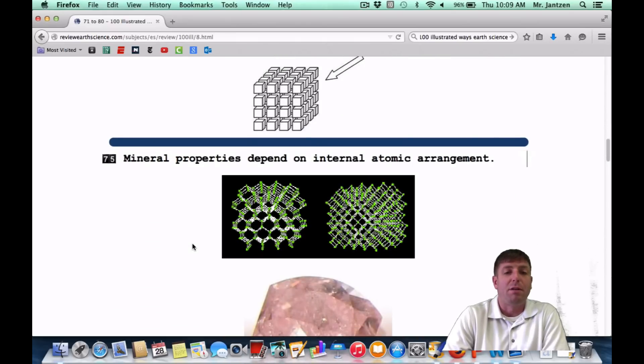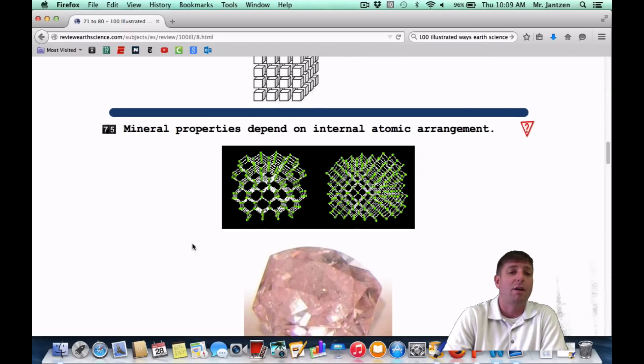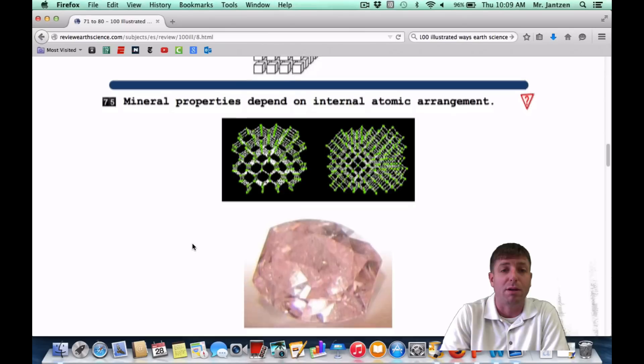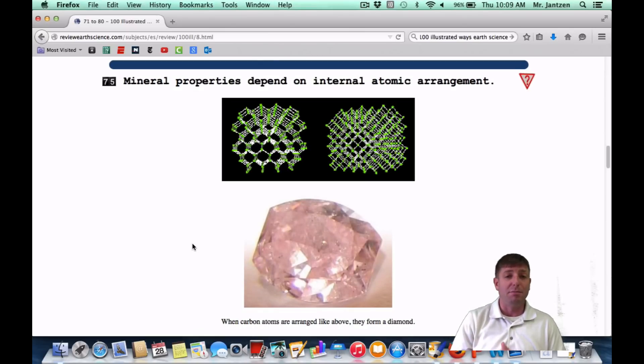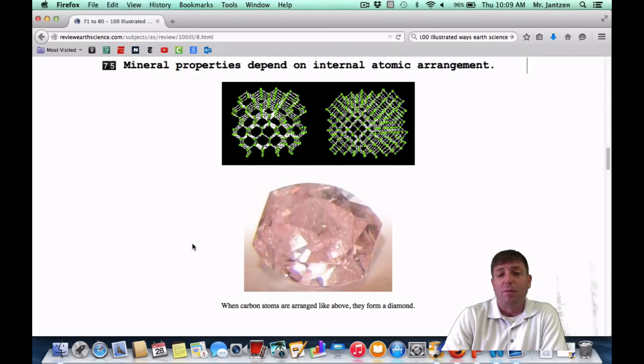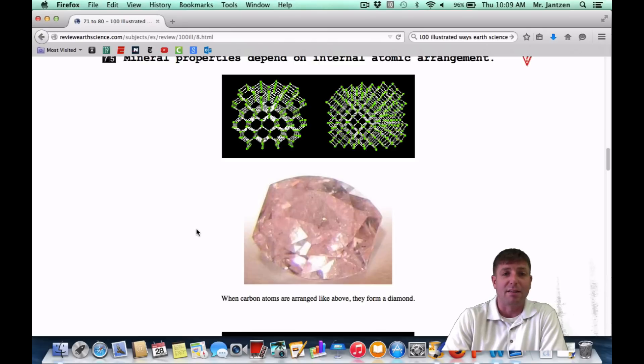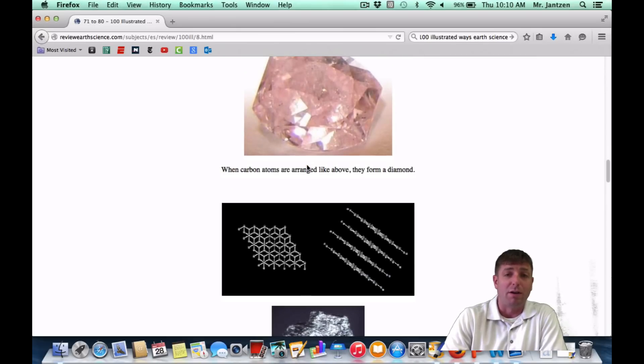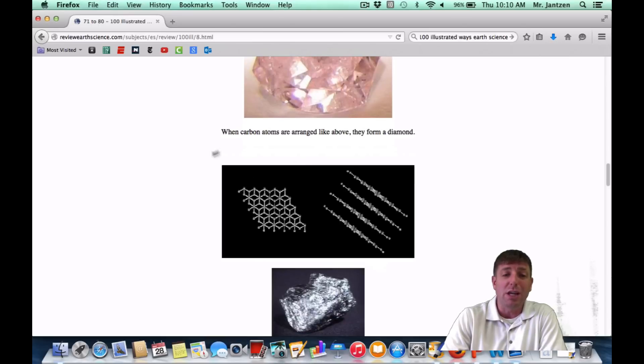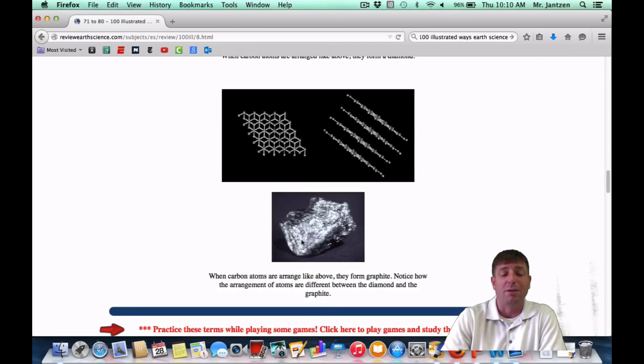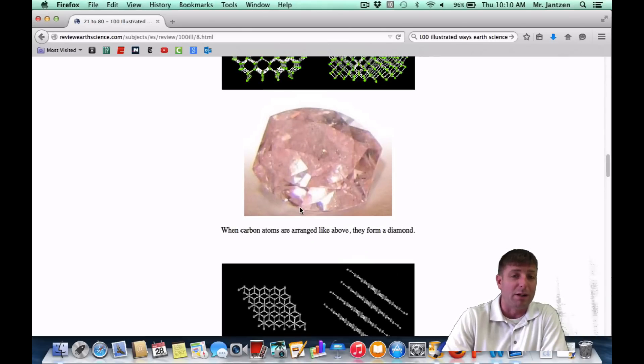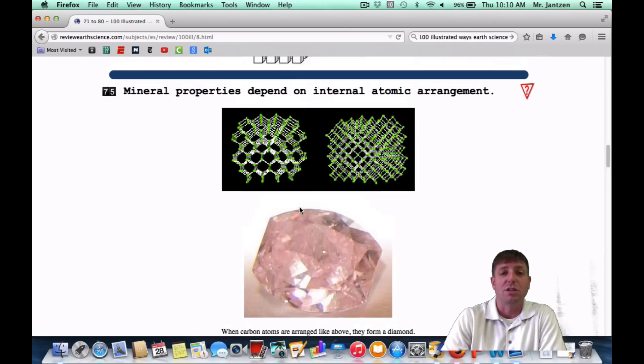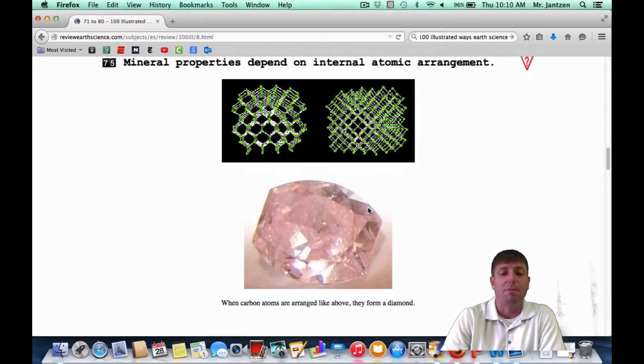Number 75, mineral properties depend upon the internal atomic arrangement, the internal arrangement of the atoms. I have my classes repeat this out loud. It's such an important concept. So depending upon how the atoms are stacked in the middle will determine all its properties: its hardness, its luster, its cleavage, all this stuff. So once again, the common example is carbon atoms. If carbon atoms are kind of stacked and spread out, in either a tetrahedra form or what have you, they're going to form something very hard, like a diamond. But if they're stacked in like sheets and they're kind of just stacked on top of one another, they're going to be something like graphite, and graphite is not very valuable while a diamond can be very valuable. So once again, it's all about how the atoms are arranged. The internal arrangement of the atoms is going to determine the properties of a mineral.